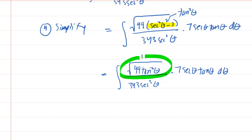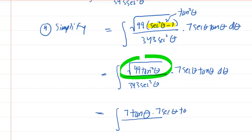The simplifying continues. We now have the square root of a perfect square: the square root of 49 is 7, and the square root of tangent squared is just tangent, since the square root and squaring cancel each other out. Then you have all of this times 7 secant theta tangent theta d theta, and this is over 343 secant cubed of theta.